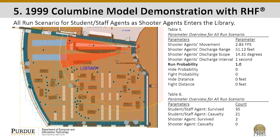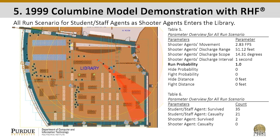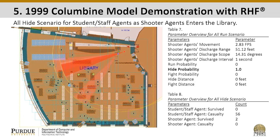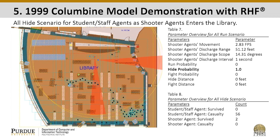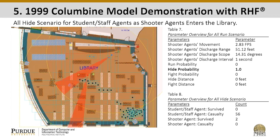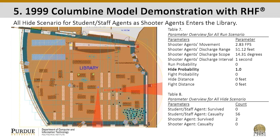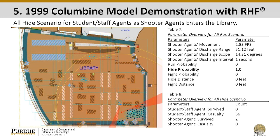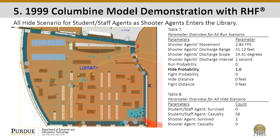The next scenario is all hide, executed without any physical shelter. As soon as a shooter comes in, all agents move toward the southeast corner of the library. Despite the shelter-in-place execution, we can see the number of casualties accumulating. Unfortunately, in many cases, shelter-in-place is implemented across the nation without any measures to defend the individual who is hiding.